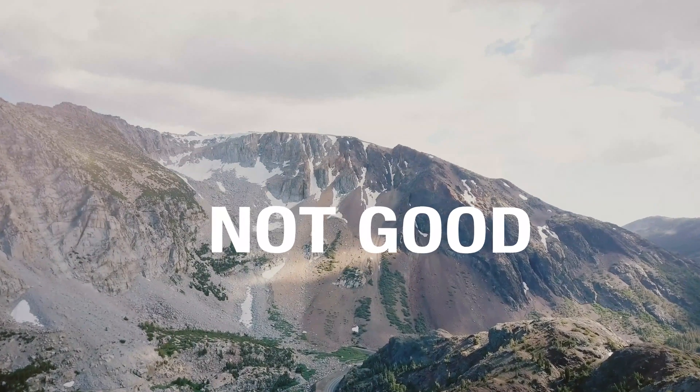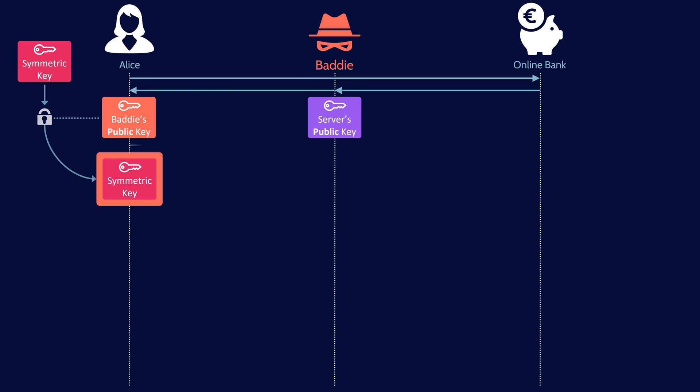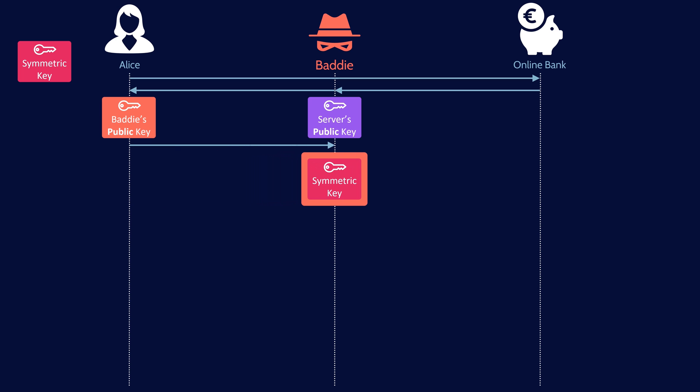Alice receives what she thinks is the server's public key, but is in fact the baddie's public key. Her browser proceeds to generate a symmetric session key and encrypt it with what it thinks is the server's public key — but it's actually the baddie's. Alice's browser sends that encrypted ciphertext, the baddie intercepts it, and because it was encrypted with the baddie's public key, it's decrypted with the baddie's private key. The baddie now has a copy of the symmetric session key.